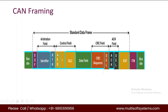After that we have the control field. The first bit is IDE — Identifier Extension. If the IDE bit is dominant (zero), it defines the 11-bit identifier. If the IDE bit is recessive (one), it determines the 29-bit extended identifier.